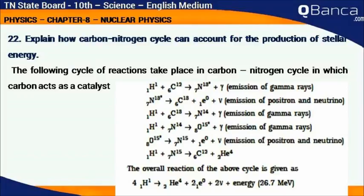H11 plus N714 gives O815 plus gamma. O815 gives N715 plus E0 plus neutrino. H11 plus N715 gives C612 plus HE4.